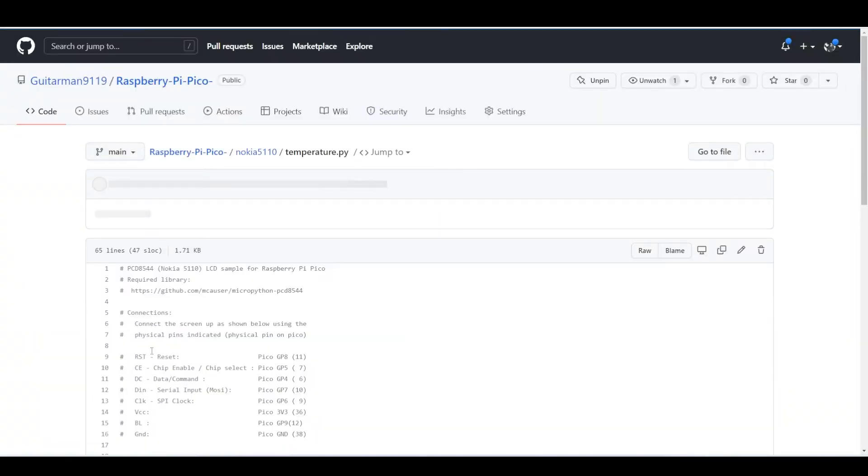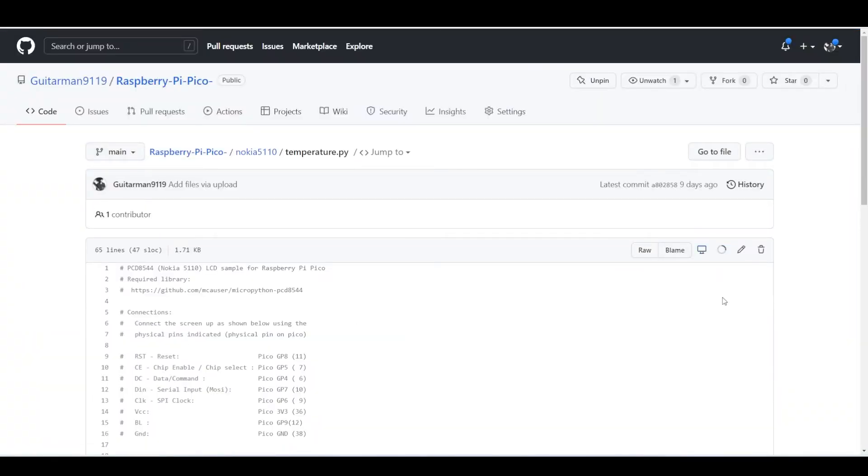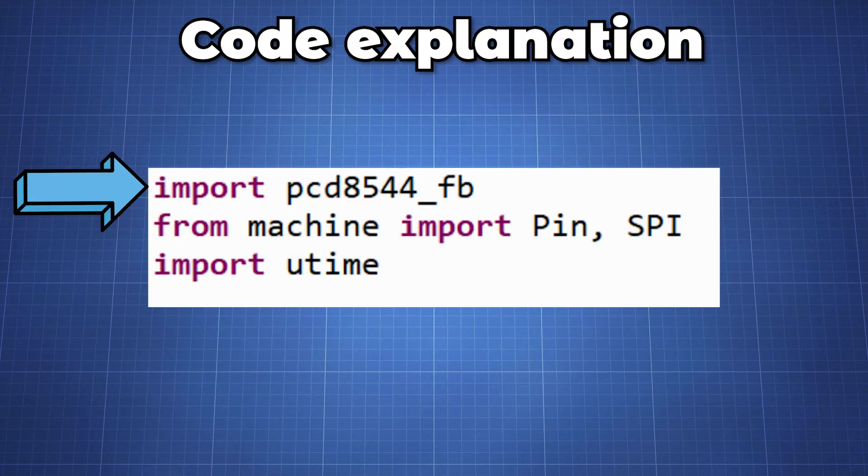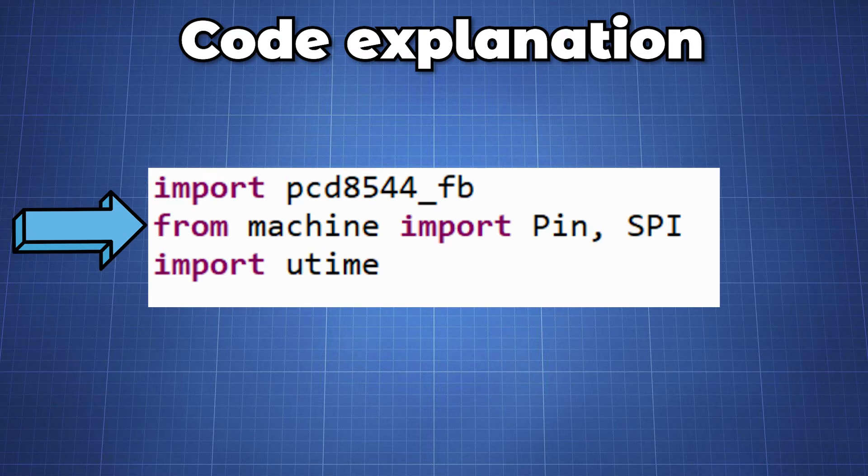The Pico has an onboard temperature sensor. We can read the sensor's analog data, convert it and then display it to our screen. Here we import the Nokia library and from machine we import the pin and SPI function and Utime to use the sleep function for delays.